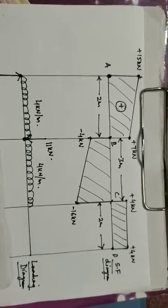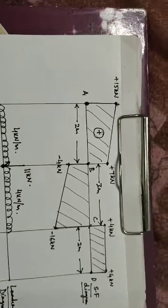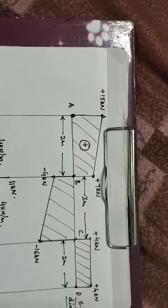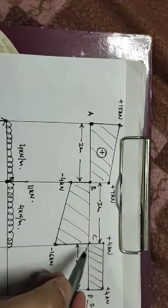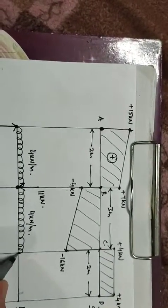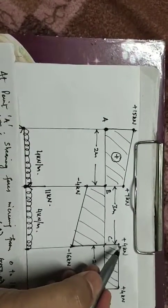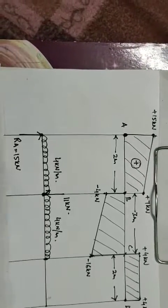At point C there is again a vertical line, indicating a load at that point. The difference is minus 16 minus minus 4, which equals minus 20. Since it is negative, there is a reaction at C: Rc equals 20 kilo Newton.